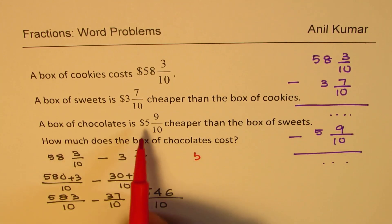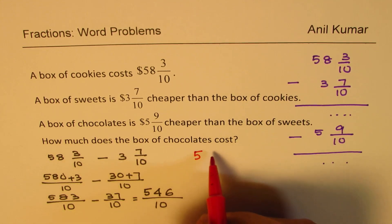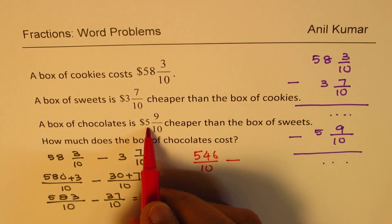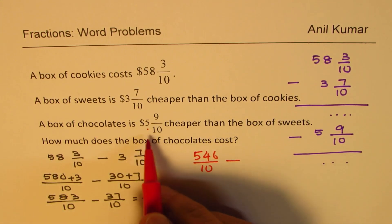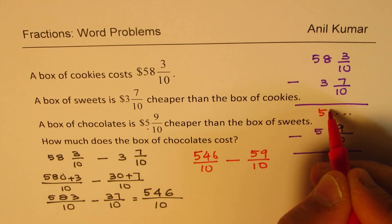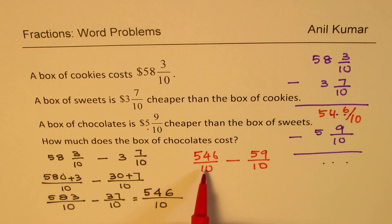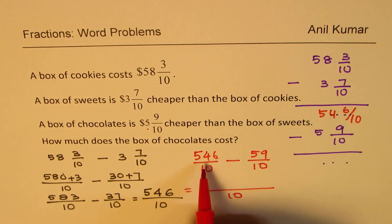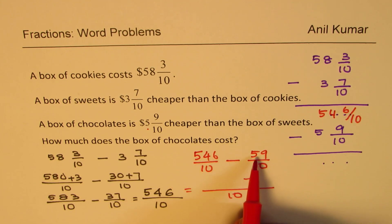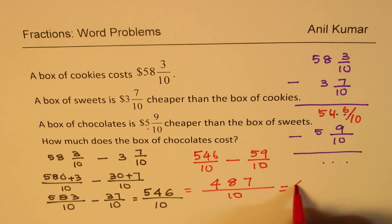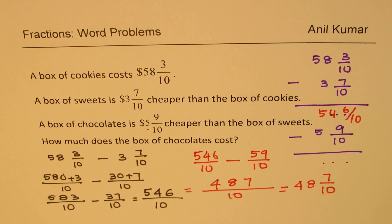So 546/10 is the cost of the sweets. Now from this we take away the cost of the chocolates, which is $5 9/10, or 59/10. We get 546/10 minus 59/10. Working it out: 16 minus 9 is 7, borrow one so 13 minus 5 is 8, and that leaves 4 in the next place — giving 487/10, which is $48 7/10. That is the cost of the chocolates.